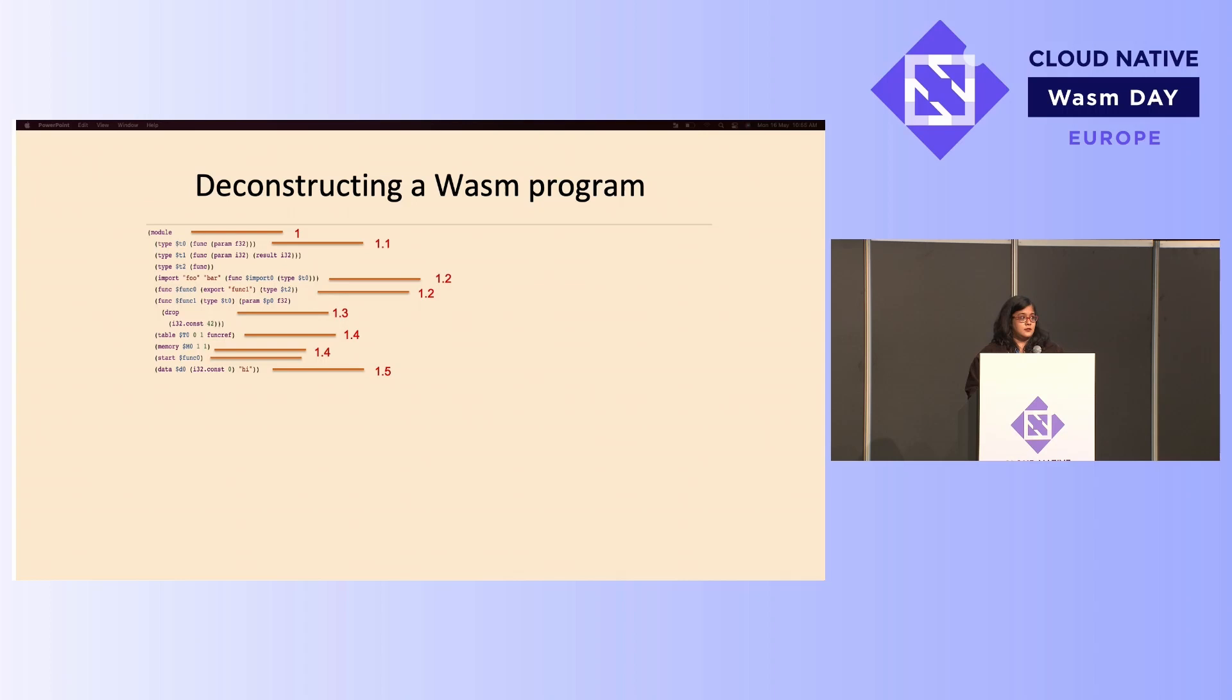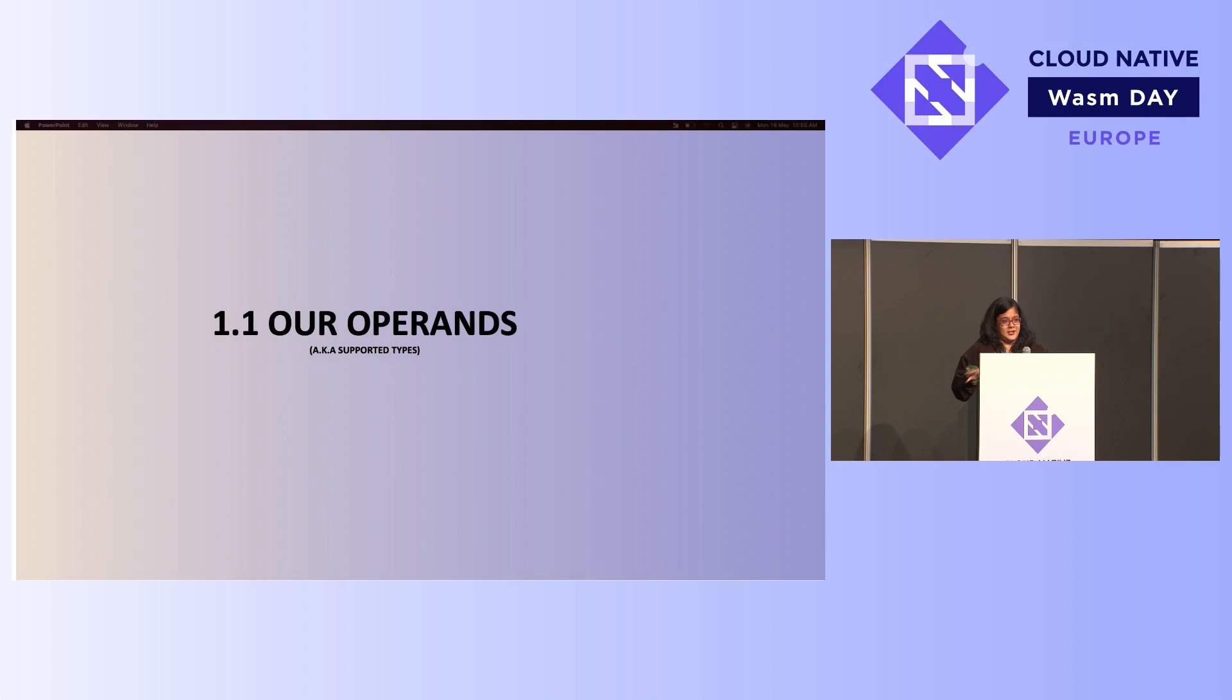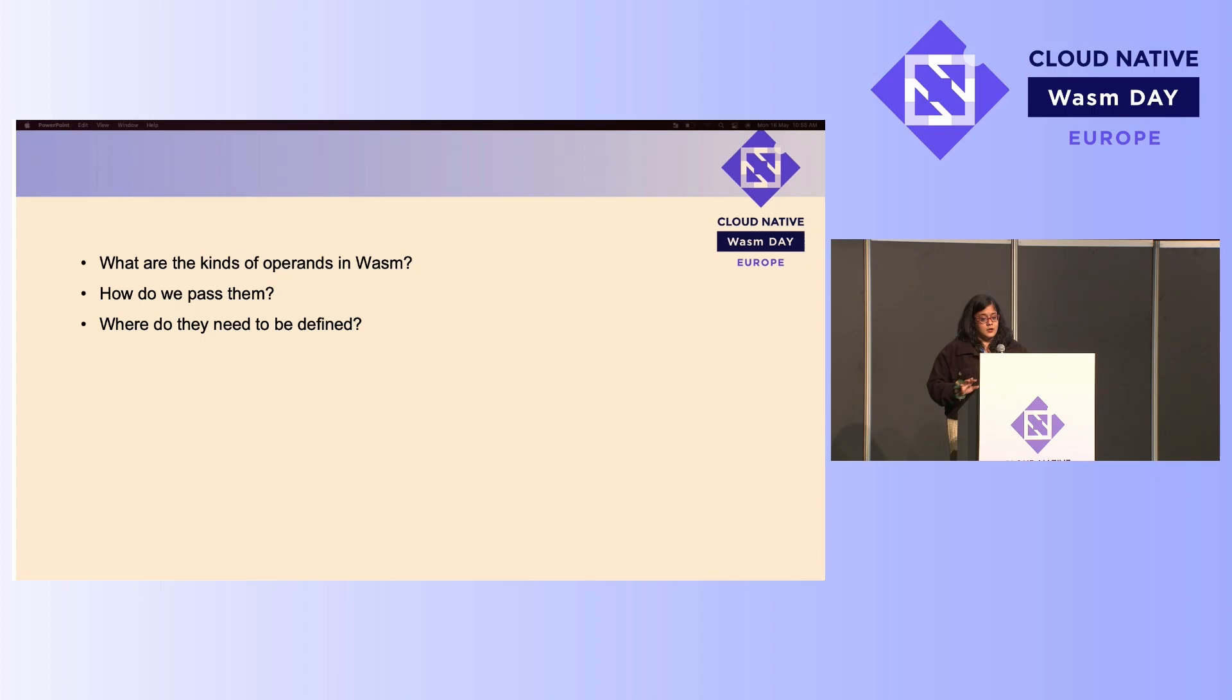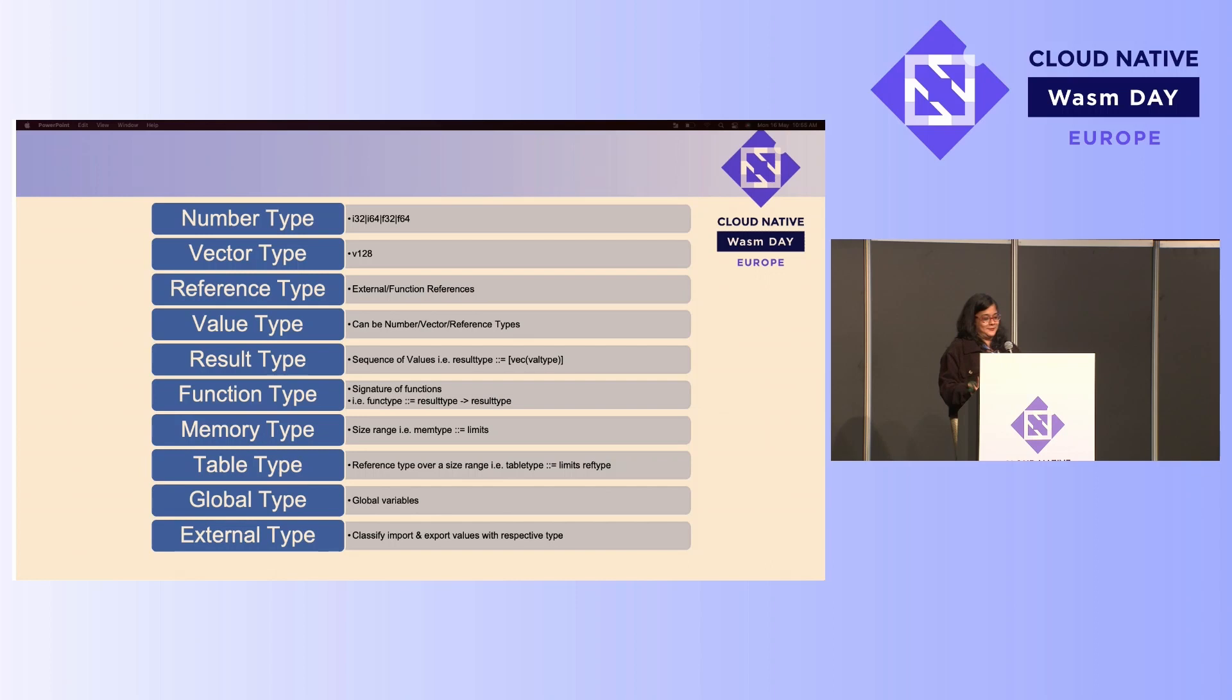So the first section that we're going to look at is the operand section. Now, this is not the specification-related language, and I've tried to drill it down as far as possible. So the operands are basically the supported types within WebAssembly. And after this section, what I want people to walk away with is what are the kind of types that are supported in WebAssembly, how do we sort of pass them, and where do they need to be defined?